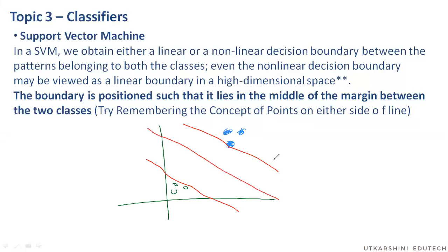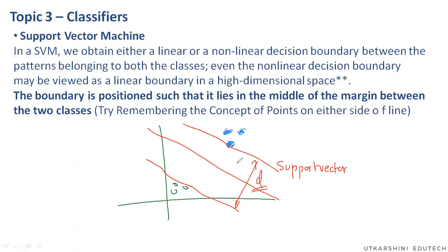What support vector machine does is that these are called support vectors, and the distance between these two vectors is what we try to maximize. We should be able to differentiate between these two sets of points in the best possible way we can.